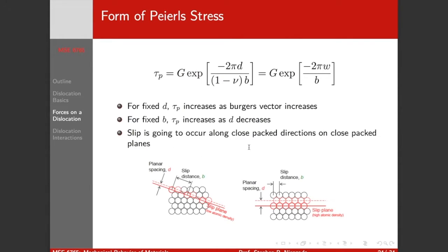So slip is going to tend to occur along the close-packed plane, along the close-packed directions on the close-packed planes if at all possible. So FCC, close-packed planes are 111, close-packed directions are 101. BCC, we don't have close-packed planes, but we're going to slip along the close-packed directions, the 101 directions. HCP, the easiest slip system for many crystals is on the basal plane, the 001 plane along the prismatic directions in those crystals.